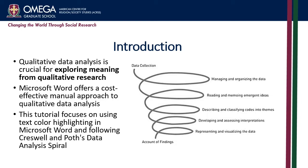Cresswell and Pott's Data Analysis Spiral is a simple five-step process for qualitative data analysis. Step one: manage and organize the data. Step two: reading and memoing emergent ideas. Step three: describe and classify codes into themes. Step four: develop and assess interpretations. Step five: represent and visualize the data.